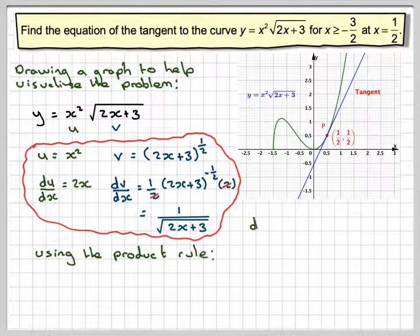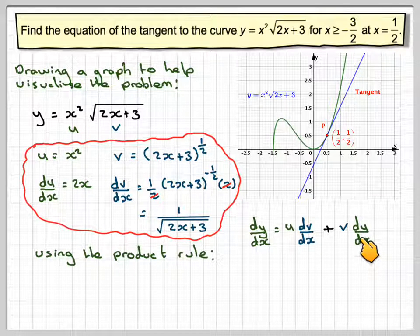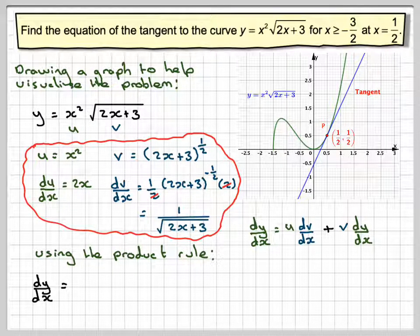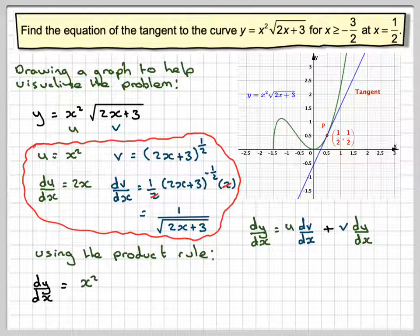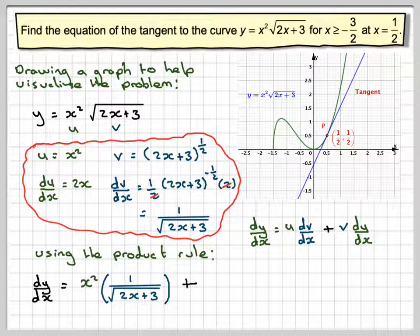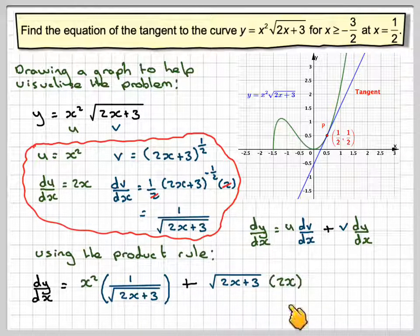Using the product rule, dy by dx is u dv plus v du by dx. So dy by dx is going to be equal to u, which is x squared, times dv by dx, which is 1 over the square root of 2x plus 3, plus v, which I'm going to write back in its original format, the square root of 2x plus 3, times du by dx, which is 2x.